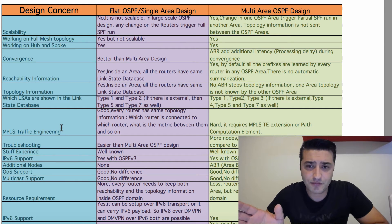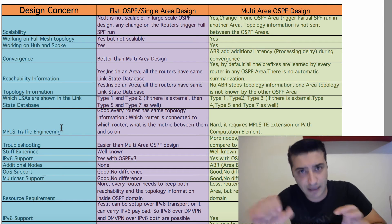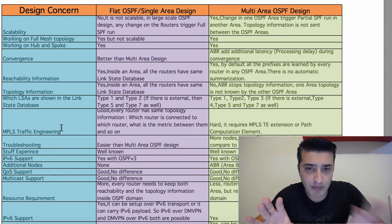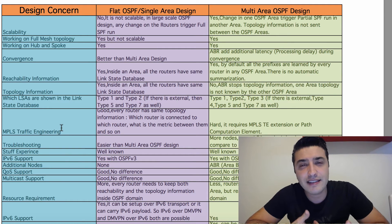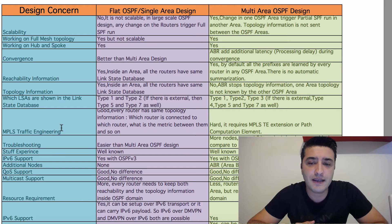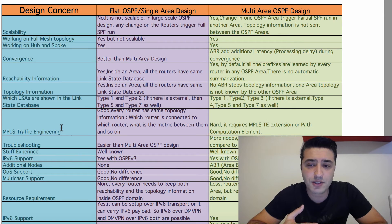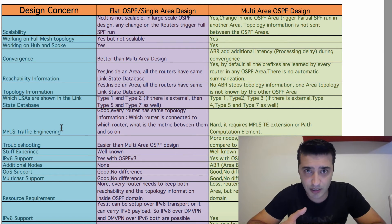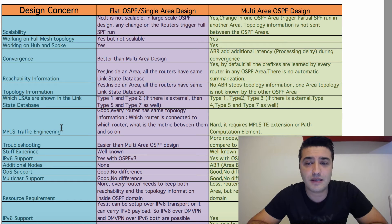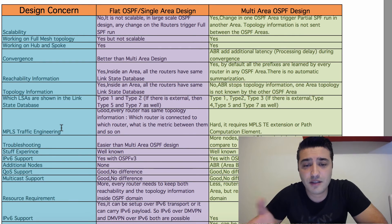In multi-area OSPF design, between areas, reachability information is sent with no summarization. But topology information is summarized. For example, with a backbone area and a non-backbone area, reachability information is sent between them without summarization, but topology information is summarized and sent in Type 3 LSA (inter-area LSA). This is done by the ABR — the Area Border Router. The ABR looks at Type 1 and Type 2 LSAs (Type 2 LSAs are created by the DR on multi-access networks) and summarizes hundreds of entries into Type 3 LSAs sent to the other area.